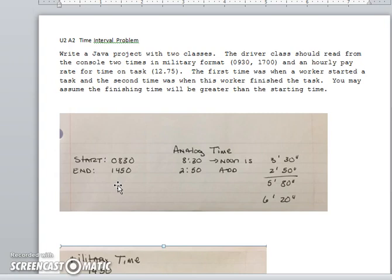In military time 14:50 is 2:50, and we would probably think through the problem like this: from 8:30 to noon is 3 hours and 30 minutes, and then 2 hours and 50 minutes to 2:50 p.m., so then you just add those together.